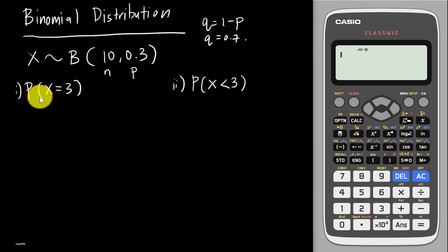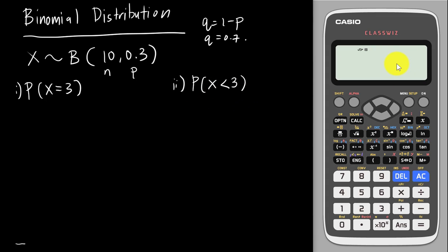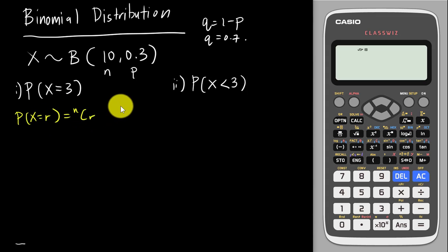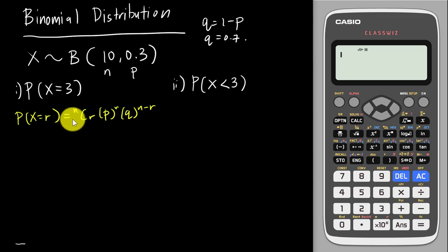I'm going to teach you how to do this manually and also how to use the calculator. The formula for P(X = r) is nCr × p^r × q^(n−r).